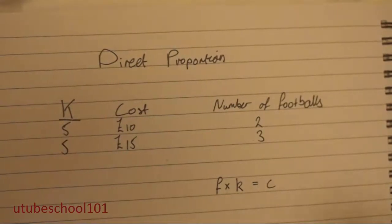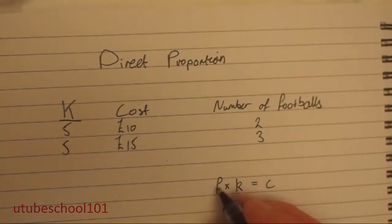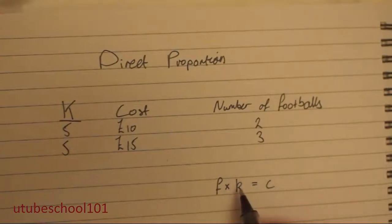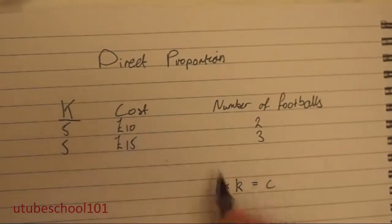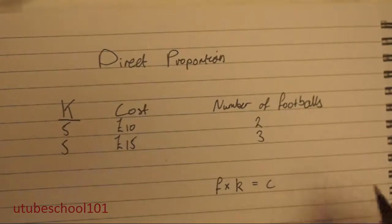I mean, this makes sense. If you buy ten footballs, you're going to multiply it by k, which is almost the cost per ball in this case, you're going to get the total cost, which is going to be fifty pounds.